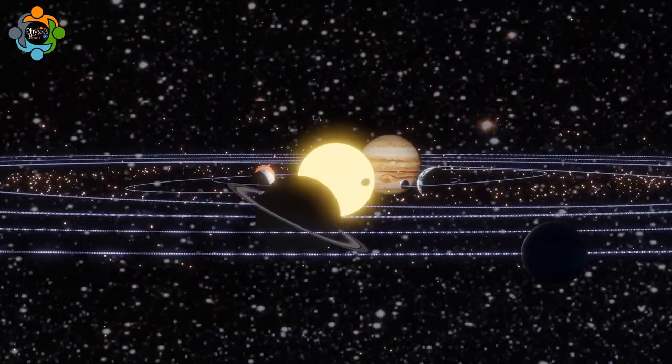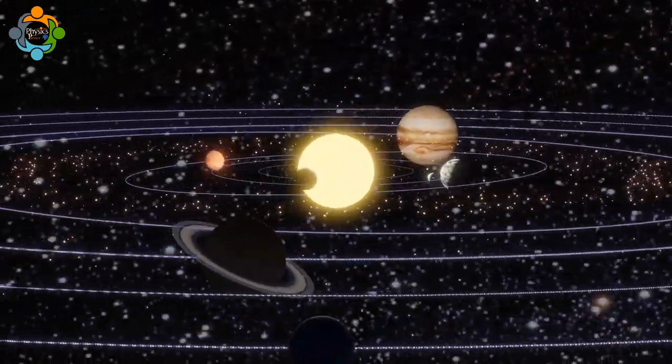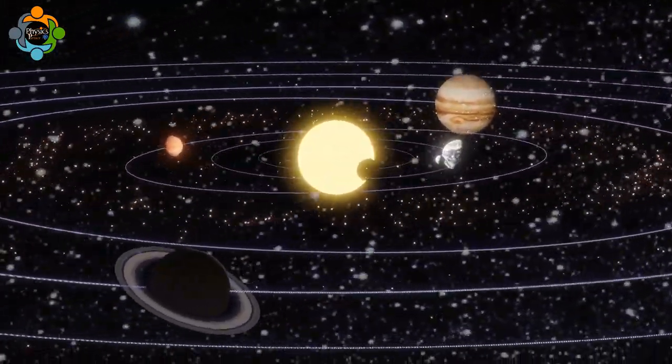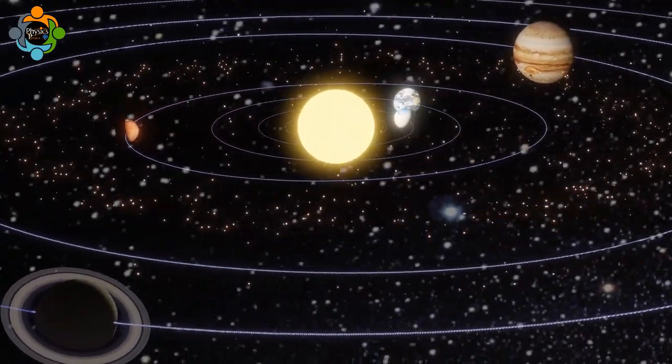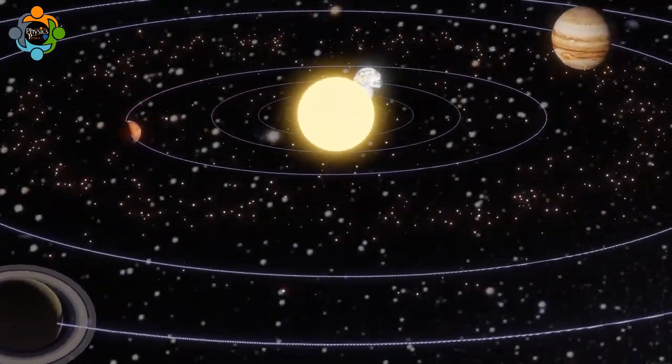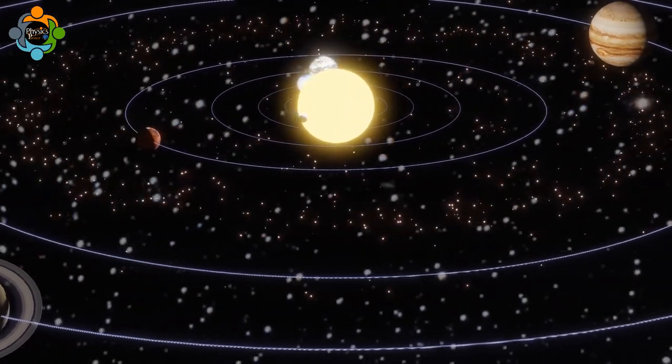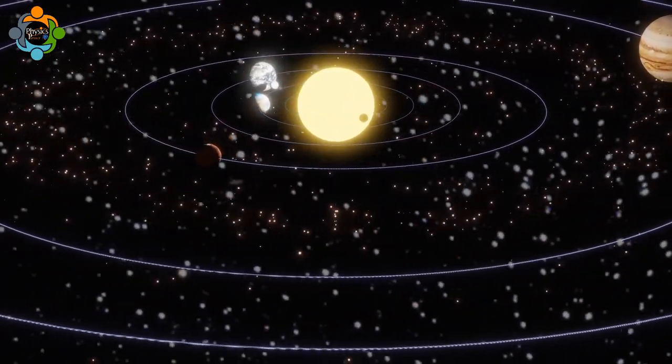This is due to its closer proximity to the sun compared to Saturn, Uranus, and Neptune. This law not only helps us understand the dynamics of these outer planets but also provides valuable insight into their unique characteristics and behaviors.